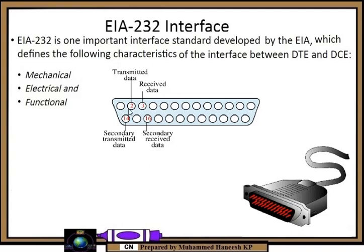In this interface we have 25 pins, each pin slot having separate functions. For example, pin number two is transmitted data, pin number three is received data, pin number 14 is secondary transmitted data, and pin number 16 is secondary received data. Here we have the female slot and the male slot.